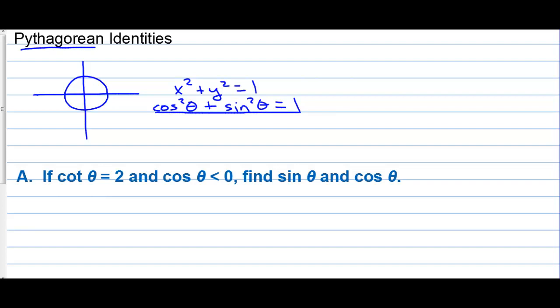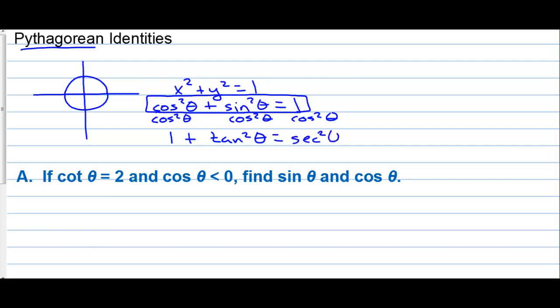Now we can take this and divide by cosine squared. So let's divide both sides by cosine squared. When we do that, we get a second Pythagorean identity. We get one plus sine squared over cosine squared is tangent squared, and one over cosine squared is secant squared. So we get one plus tangent squared is the same as secant squared. That's our second Pythagorean identity.